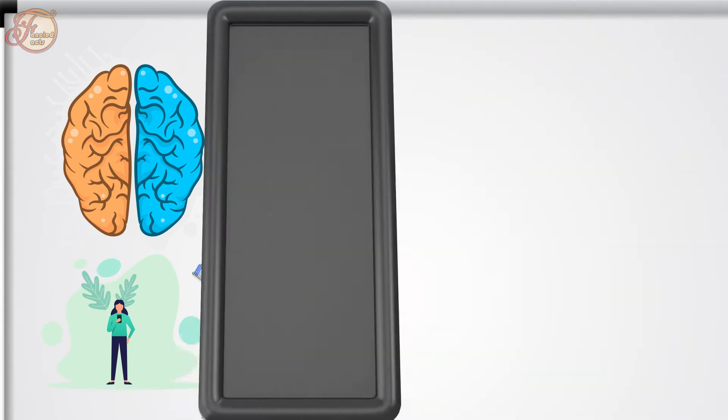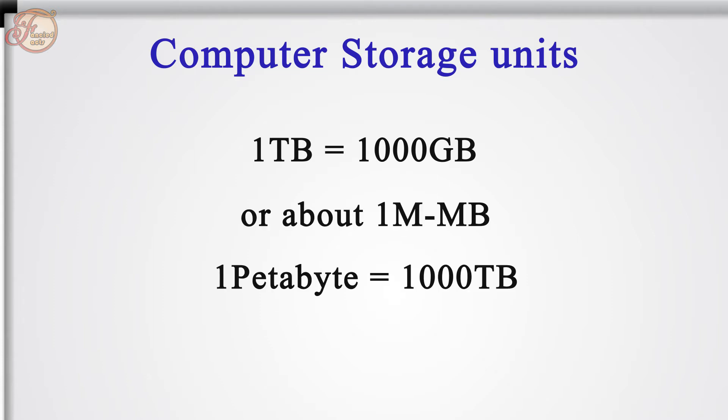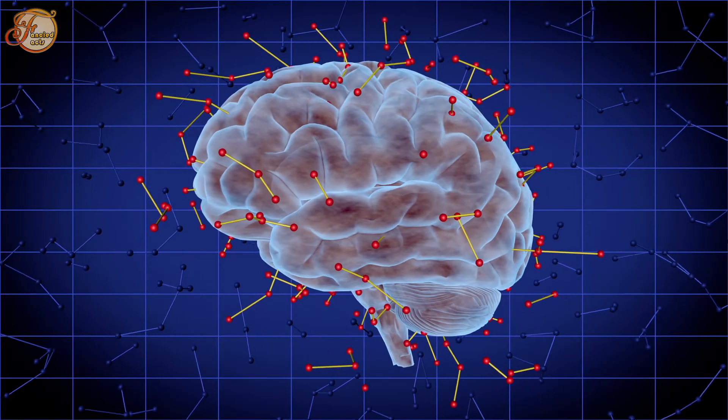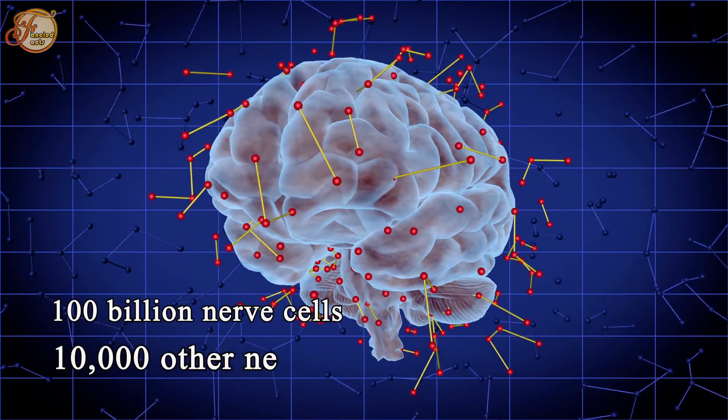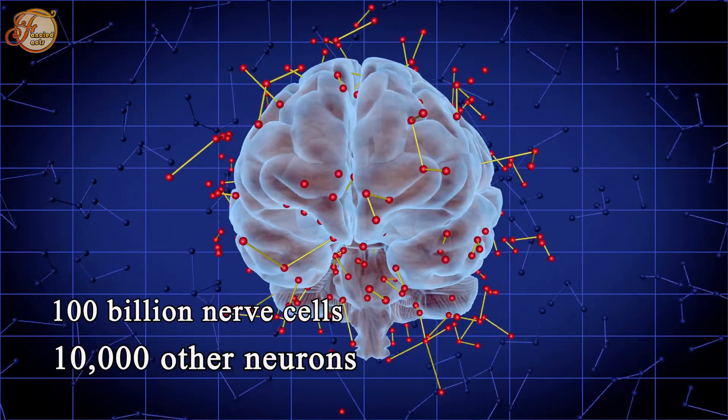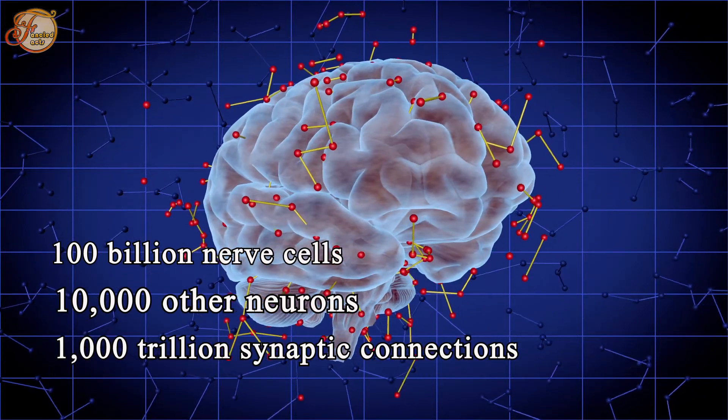Let's quickly go over some computer storage units. One terabyte is equal to about 1,000 gigabytes, or about 1,000,000 megabytes. A petabyte is about 1,000 terabytes. All right, let's talk about our brain, which has about 100 billion nerve cells. Each neuron is connected to up to 10,000 other neurons, passing signals to each other through 1,000 trillion synaptic connections.